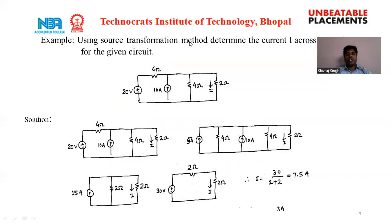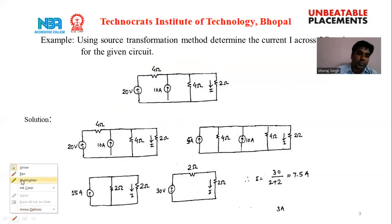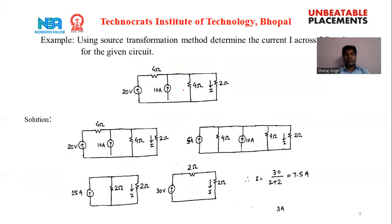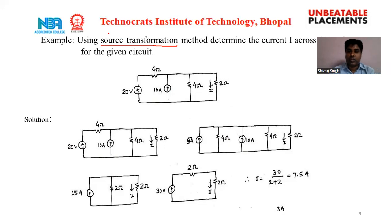The second example asks us to determine the current across the 2 ohm resistor using source transformation. This circuit could also be solved using network theorems such as KVL, KCL, nodal analysis, or mesh analysis, but here we use source transformation. The 2 ohm resistance is the load. We first convert the 20 volt source with 4 ohm series resistance into a current source.